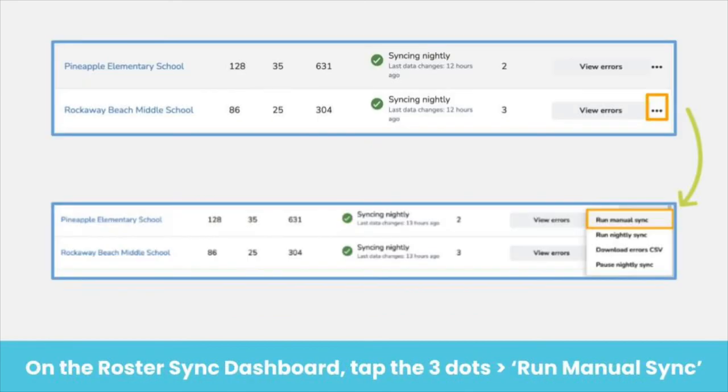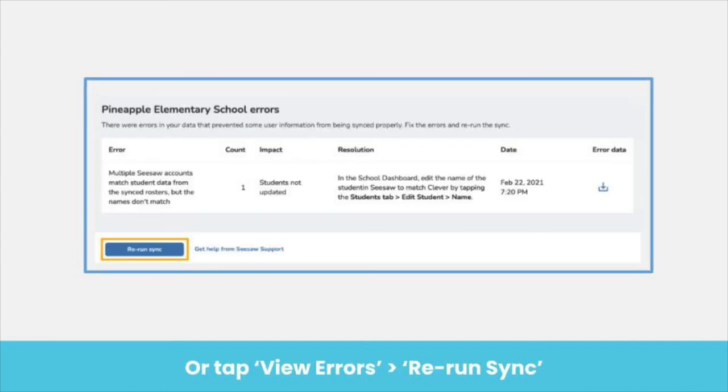Once we've updated all of the names on accounts that are listed in the Errors CSV to match the information from Clever or Classlink, we can head back to the Roster Sync dashboard, tap the three dots across from the school name, and tap Run Manual Sync to clear the errors. You can also tap View Errors, then tap the Rerun Sync button at the bottom of the page to clear errors.